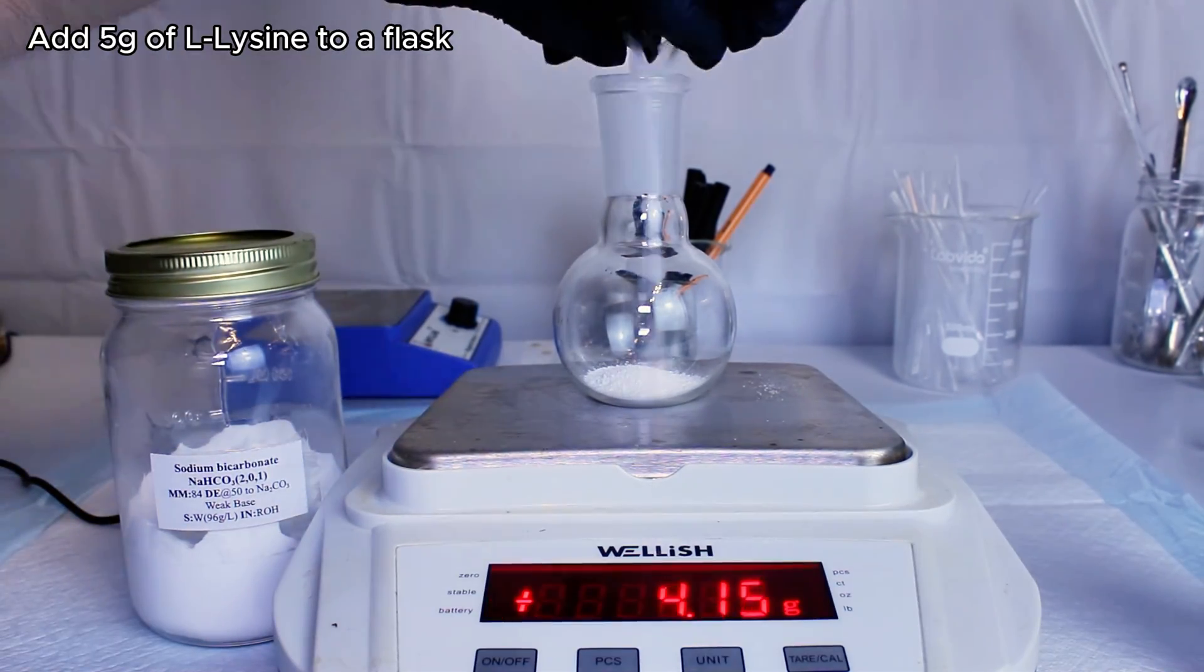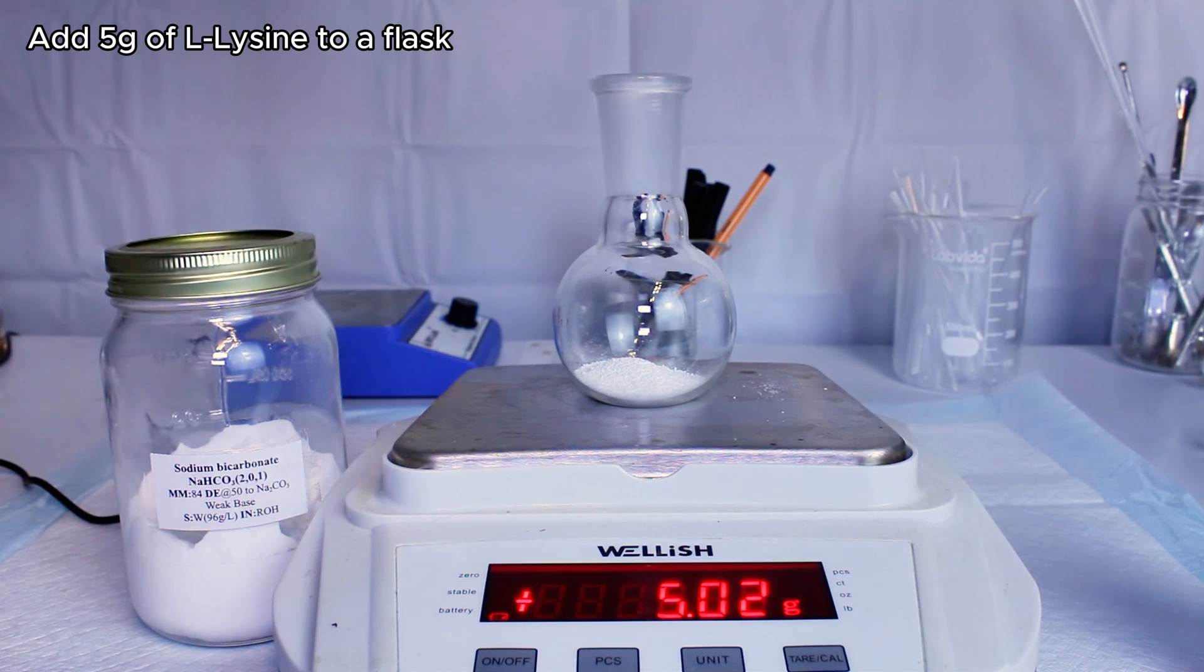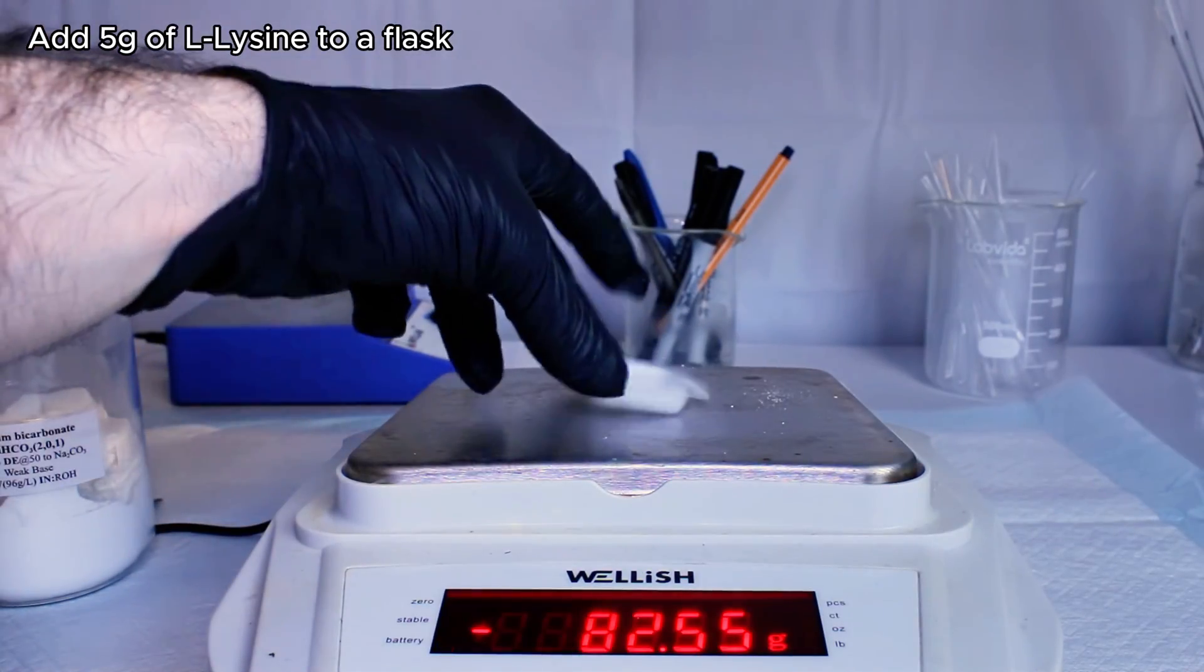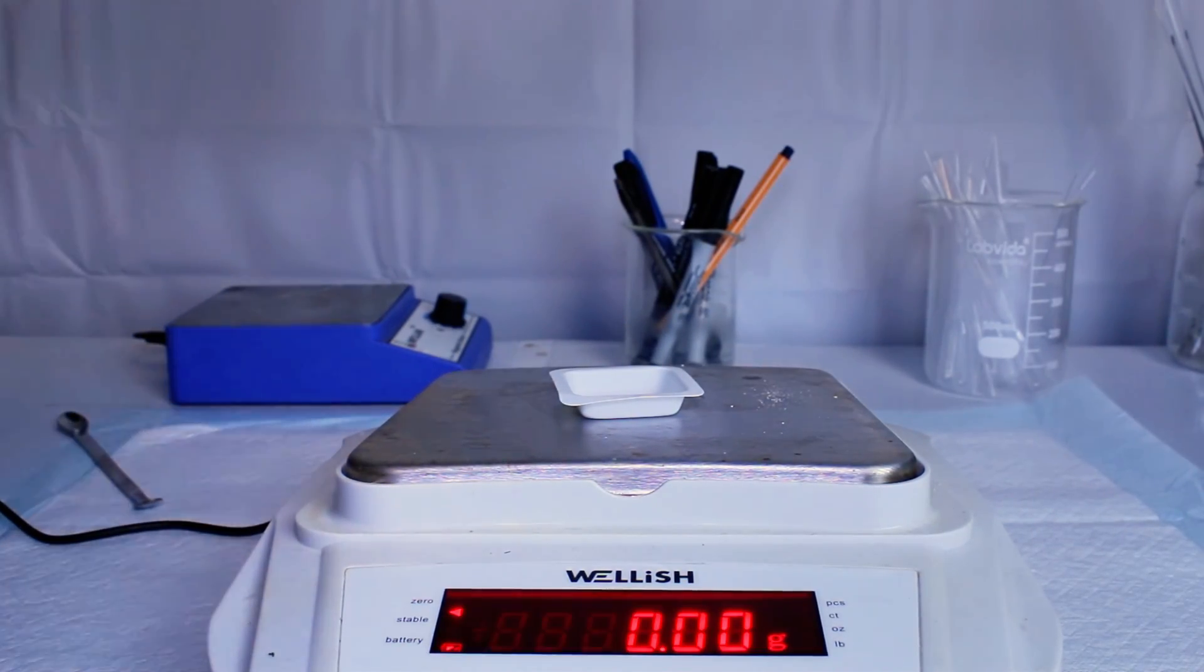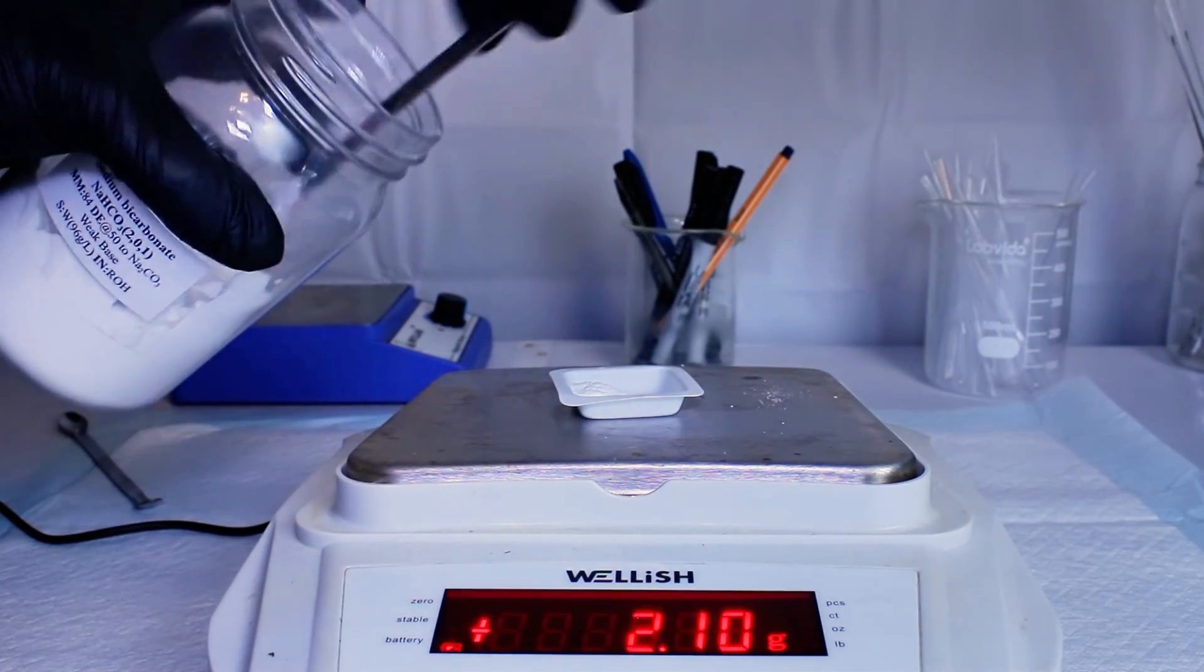To make some cadaverine, the first thing I want to do is break open some lysine capsules and pour the contents into a small flask. I ended up collecting about 5 grams, which, considering how terrible this stuff smells, is probably a bit much. I would maybe scale this back a little bit.